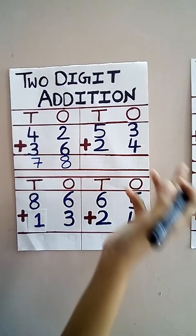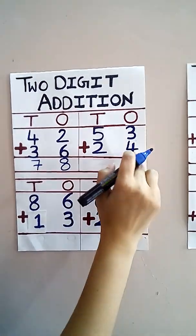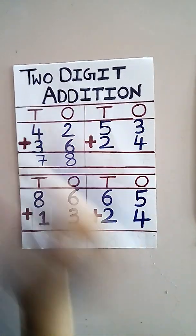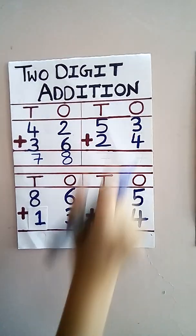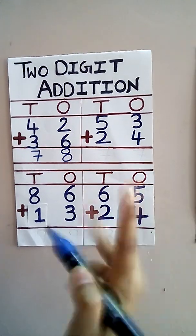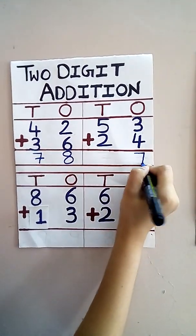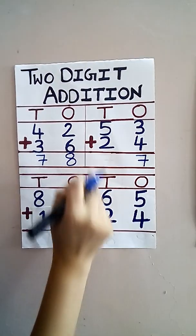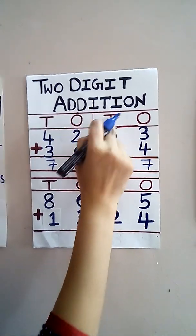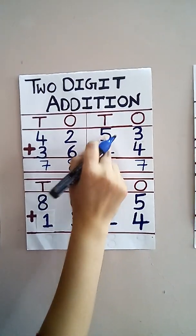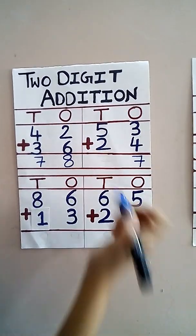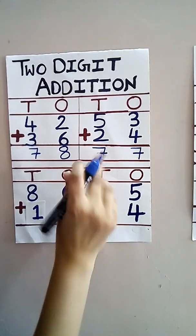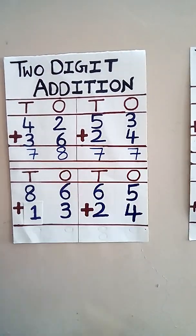Now let's do another one. Three plus four. Keep four in mind and then add three — five, six, seven. Seven ones. Then five tens and two tens — add them: five, six, seven. Seven tens. We got seventy-seven.